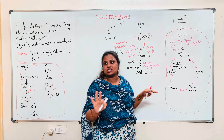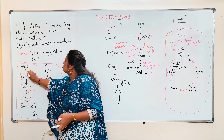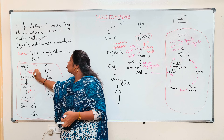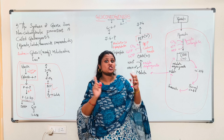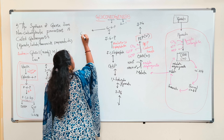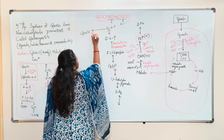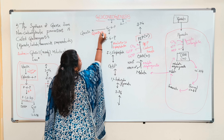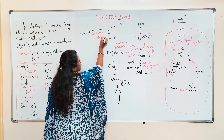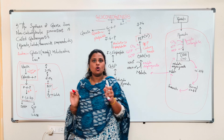Our third irreversible step is the conversion of glucose-6-phosphate to glucose. In glycolysis, glucokinase catalyzes the conversion of glucose to glucose-6-phosphate. In gluconeogenesis, we change the enzyme: the new enzyme that catalyzes this step is glucose-6-phosphatase, not glucokinase. So our third irreversible step is also resolved.